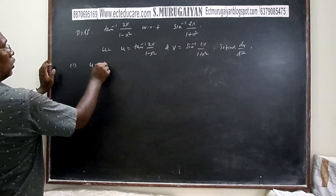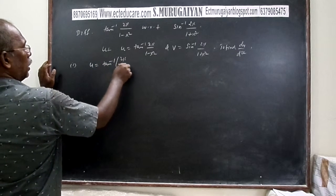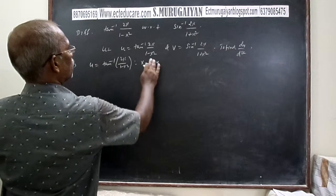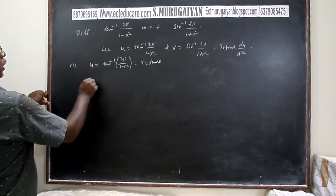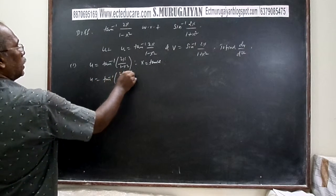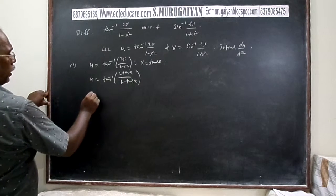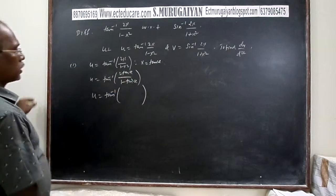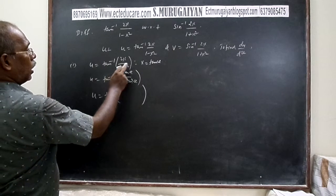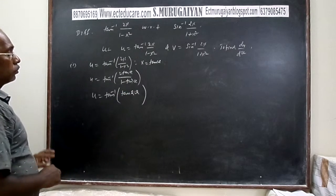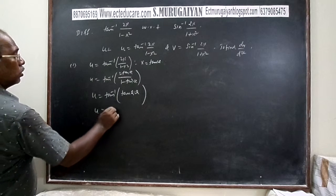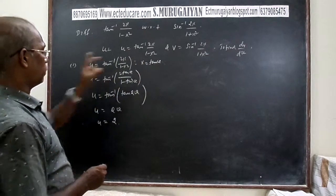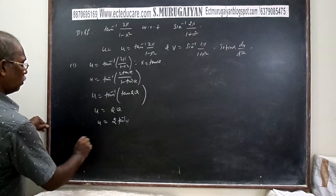Case 1: u = tan⁻¹(2 tan θ / (1 - tan²θ)). Using the identity, 2 tan θ/(1 - tan²θ) = tan 2θ. So u = tan⁻¹(tan 2θ) = 2θ = 2 tan⁻¹(x). Differentiating: du/dx = 2/(1 + x²).